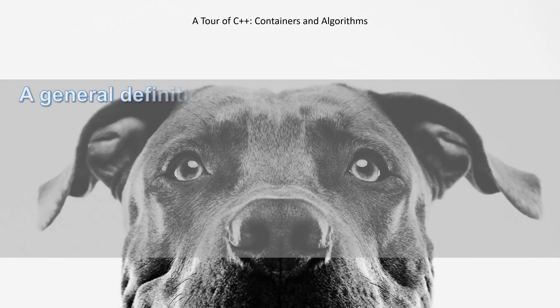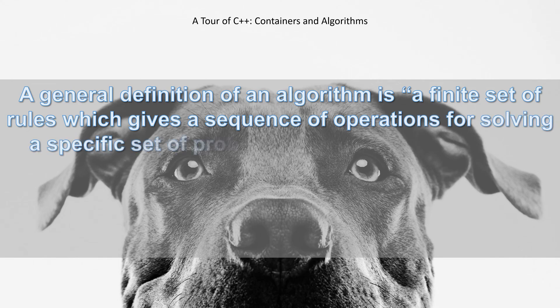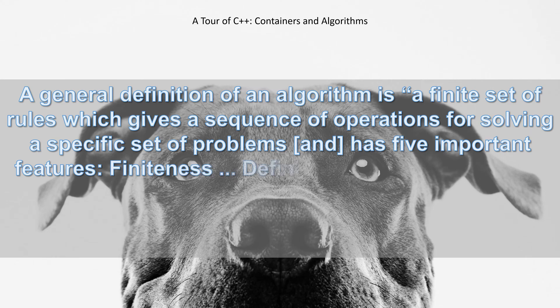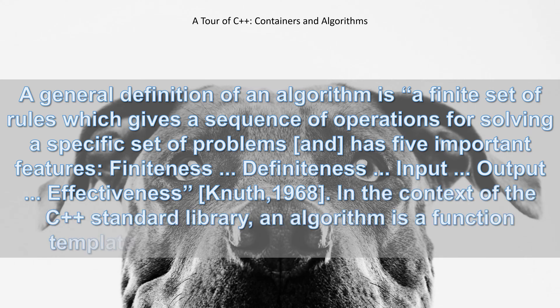A general definition of an algorithm is a finite set of rules which gives a sequence of operations for solving a specific set of problems, and has five important features: Finiteness, Definiteness, Input, Output, and Effectiveness, according to Knuth in 1968.